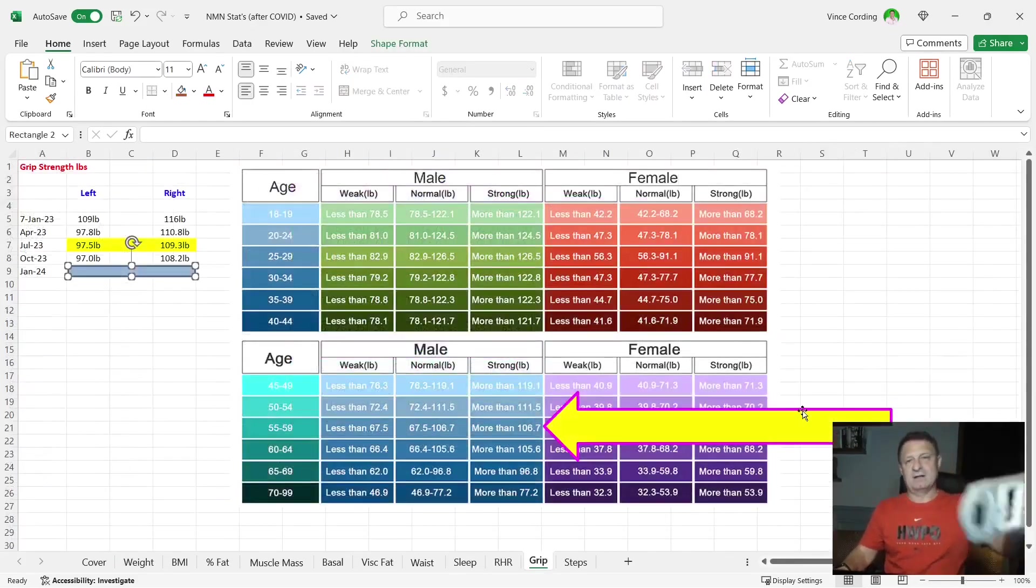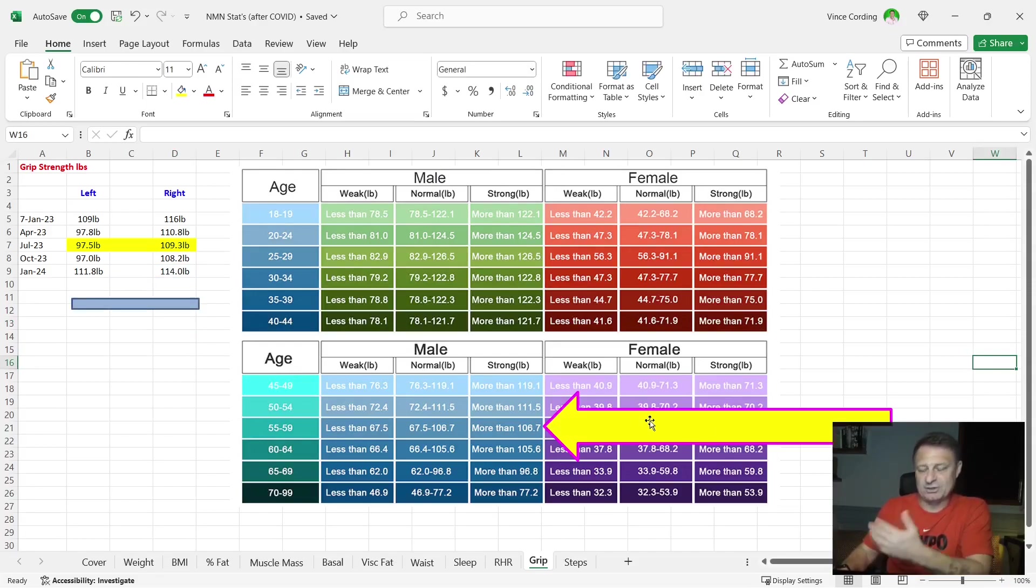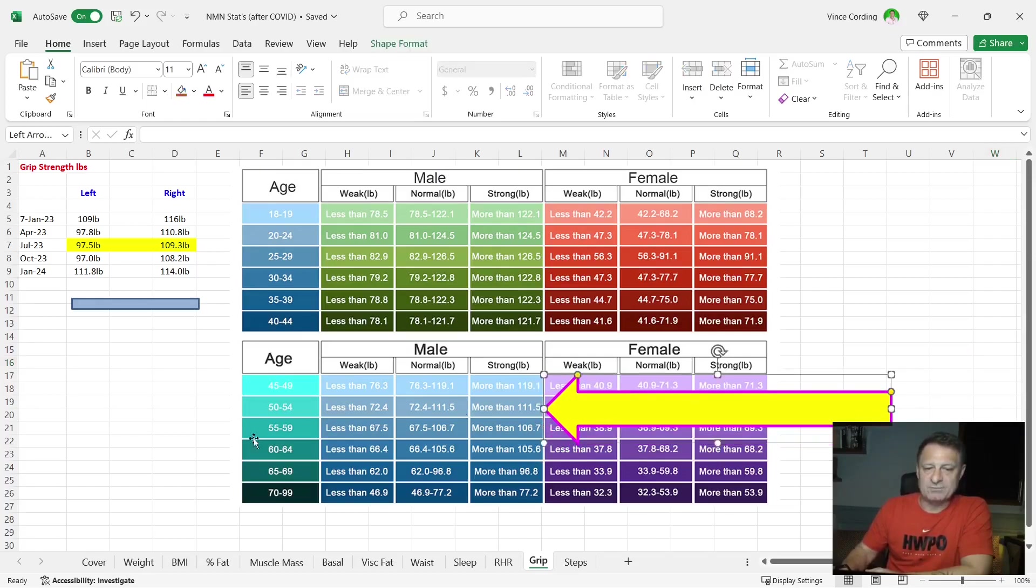Moving on to my grip strength. And this is the monitor I use for measuring my grip strength. You can see here that in January, the end of January, it was 111.8 pounds on my left hand and 114.0 on my right hand. Looking at this metric here, looking at this graph here, you can see that for a man between the age of 55 and 59, more than 106.7 has me in the strong range, which is great. If you have a look up here to somewhere, a man between the age of 50 and 54, anything more than 111.5 is classed as strong. If you look at these scores, 111.8 in my left hand has me as strong and my right hand, 114 has me as strong. So technically on this particular graph, I'm a strong, I'm in the strong range for a man between the age of 50 and 54, even though at present, I'm 59. 59 now, 60 in April.